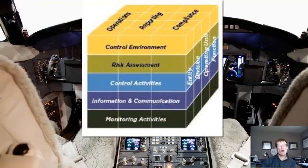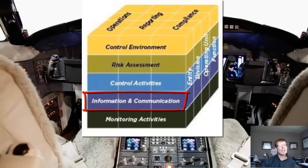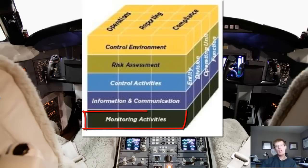The last two areas of the COSO internal control framework are the information and communications component — which is in essence the ability of the accounting system to report the activity of the company in a manner that allows management to take action — and the monitoring component, which ensures that the system of internal controls is periodically and continuously evaluated, ensuring it operates as designed and is effective. Monitoring often falls to the internal audit department, who is independent of management and often has a direct reporting relationship to the audit committee.